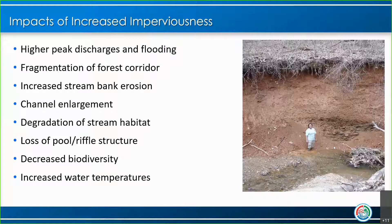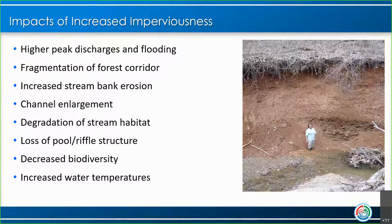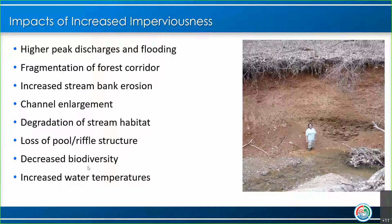Other impacts of increased imperviousness include higher peak discharges and flooding, fragmentation of the forest corridor, and stream bank erosion — because you now have a lot of runoff moving much more quickly than in a natural scenario. This is a great example — the stream used to be up here, but over time with a lot of flow, it eroded all the way down. Channel enlargement occurs because streams aren't used to this amount of water. The stream starts adjusting — it becomes deeper and wider trying to handle the extra water — which leads to the stream eroding into people's backyards. We're also getting a lot of sediment in streams, loss of habitat, and decreased biodiversity.